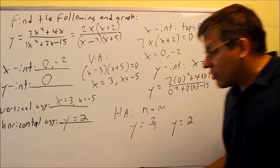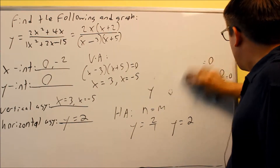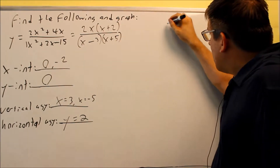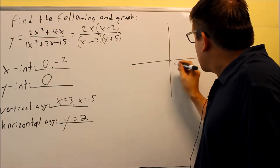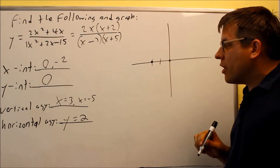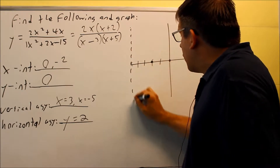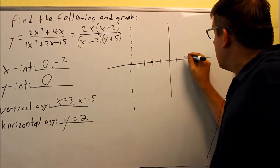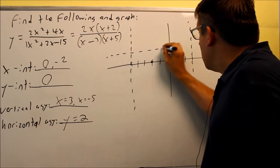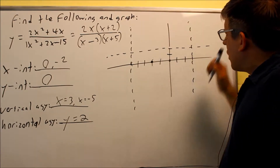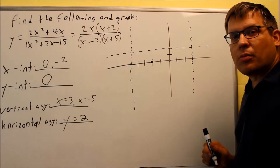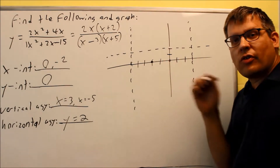Now we're ready to draw the graph. I'll clear the board and draw the asymptotes as dotted lines and plot the intercepts. The graph passes through (0, 0) and crosses at x equals negative 2 — those are the two x-intercepts. I draw vertical asymptotes at x equals negative 5 and x equals 3, and a horizontal asymptote at y equals 2.